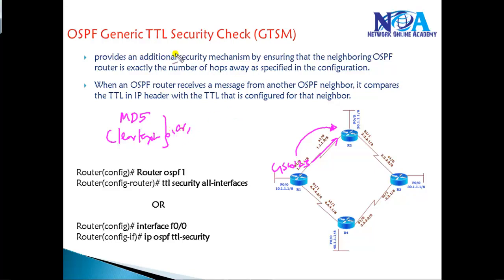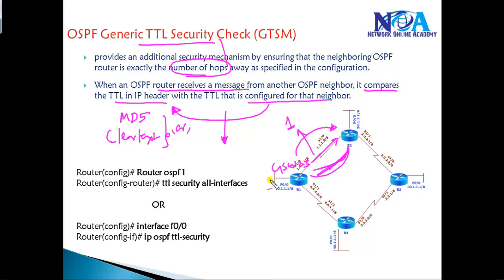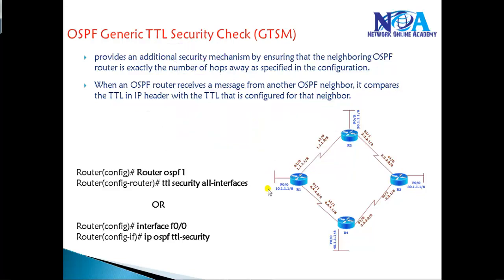Apart from that, if you want additional security, we can also go with a TTL security check mechanism. Here we can define the exact number of hops these two neighbors are away — by default the neighbors will be one hop away. Whenever OSPF receives any message with this feature enabled, it compares the TTL in the IP header with the configured TTL value for that neighbor. If that matches, then only the neighborship will come up; otherwise it will not.